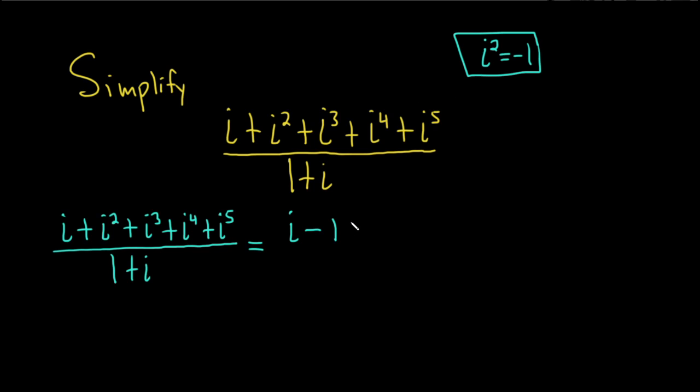And then i cubed, we can write that as i times i squared, like this. And we do that because we know what i squared is. So basically, we're using this one simple thing to do all of it. Plus, i to the fourth can be written as i squared quantity squared.